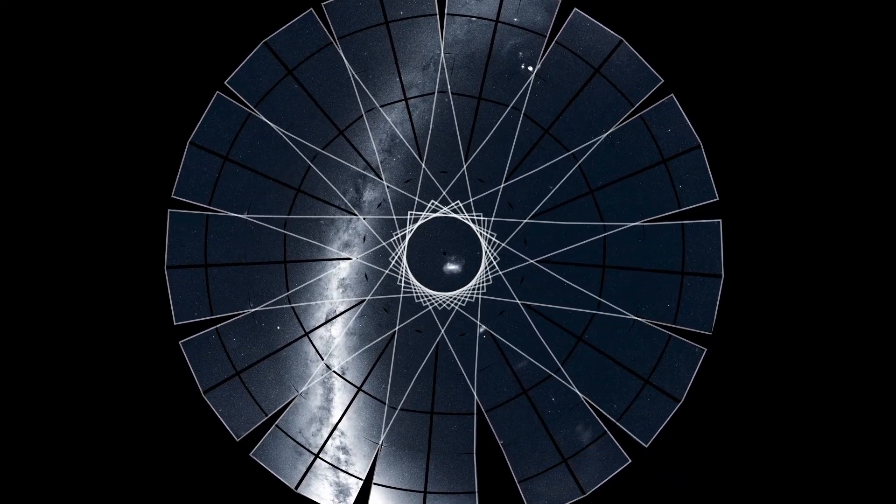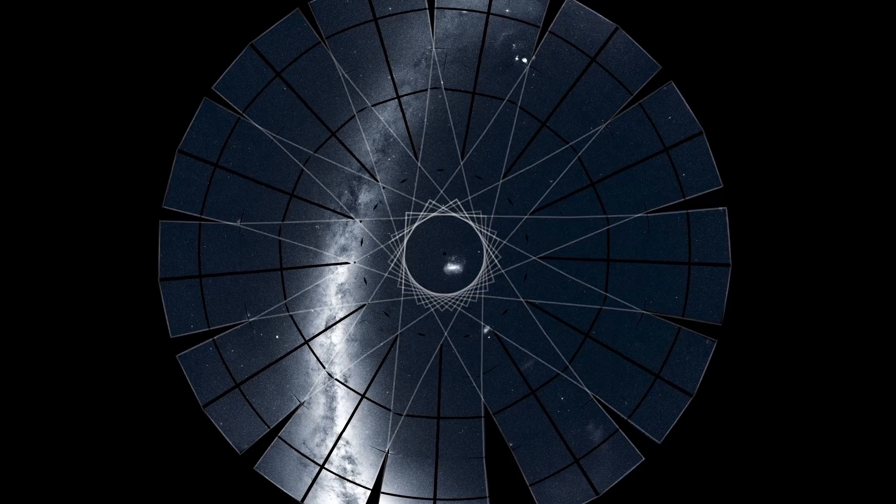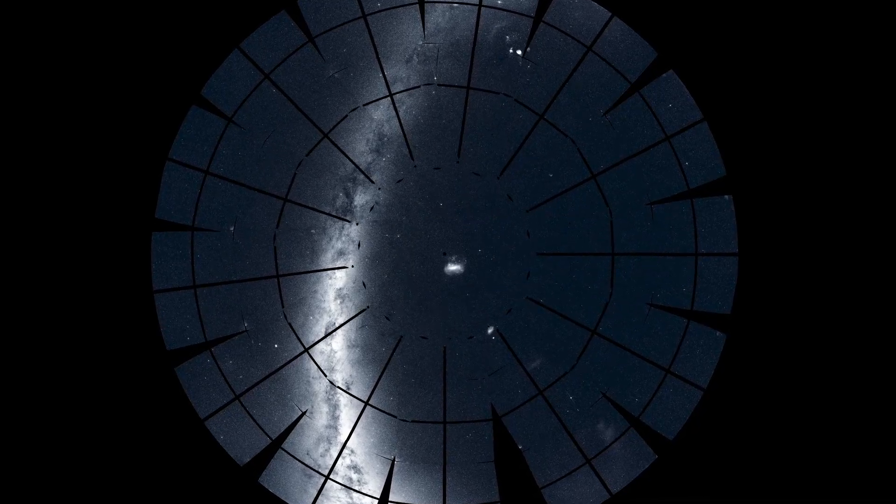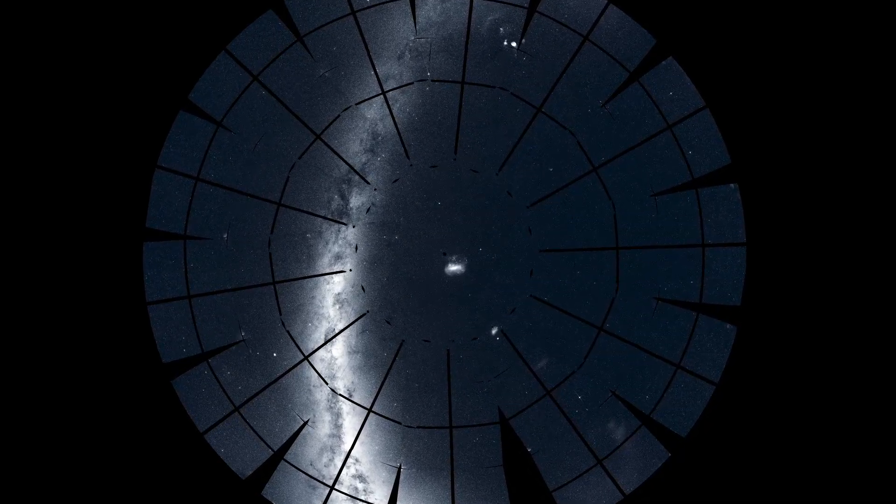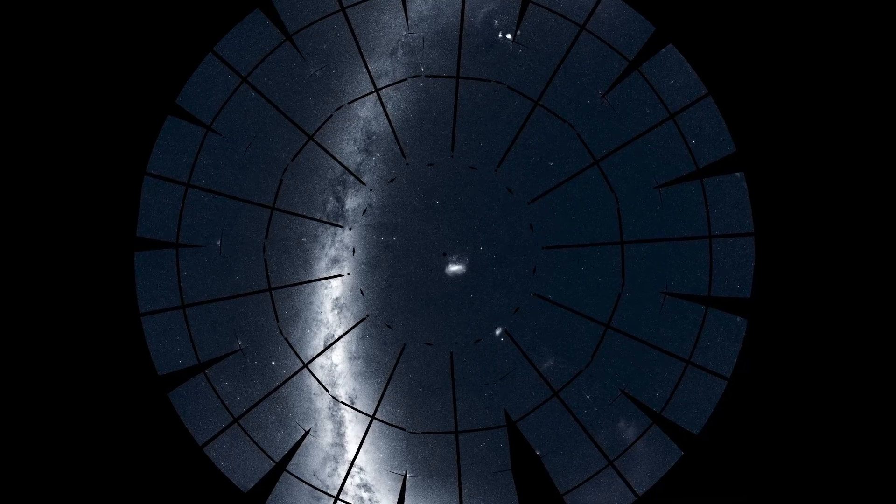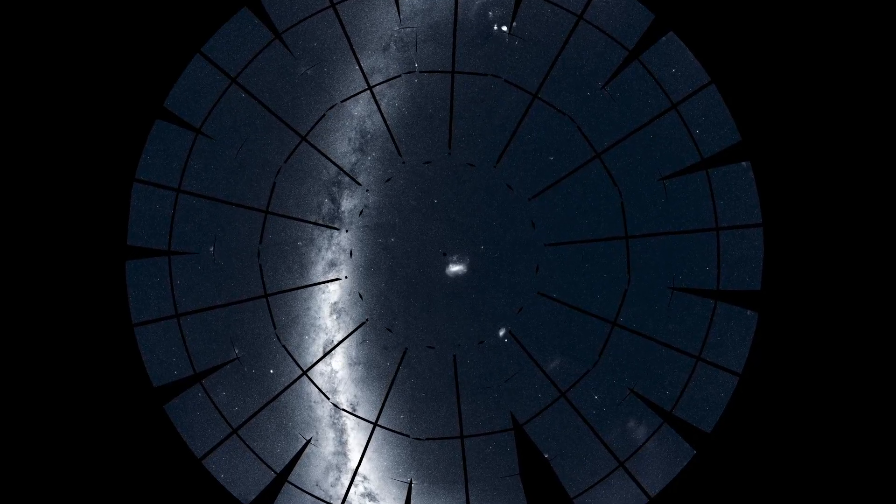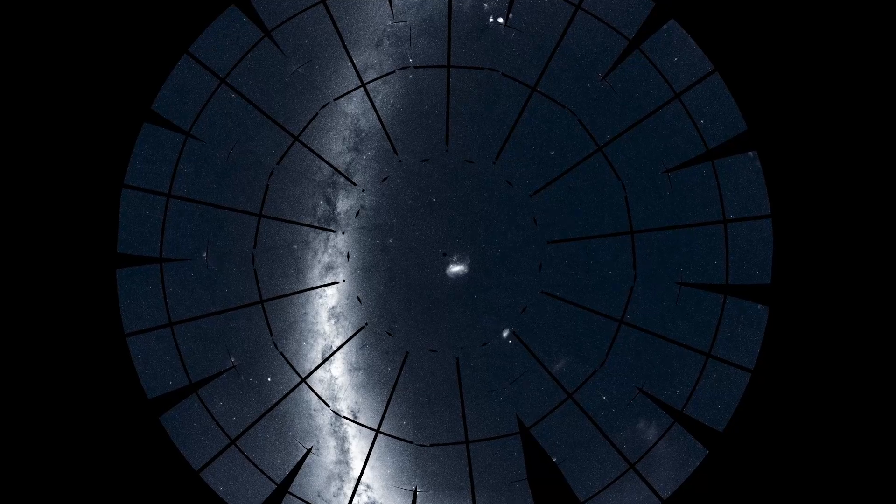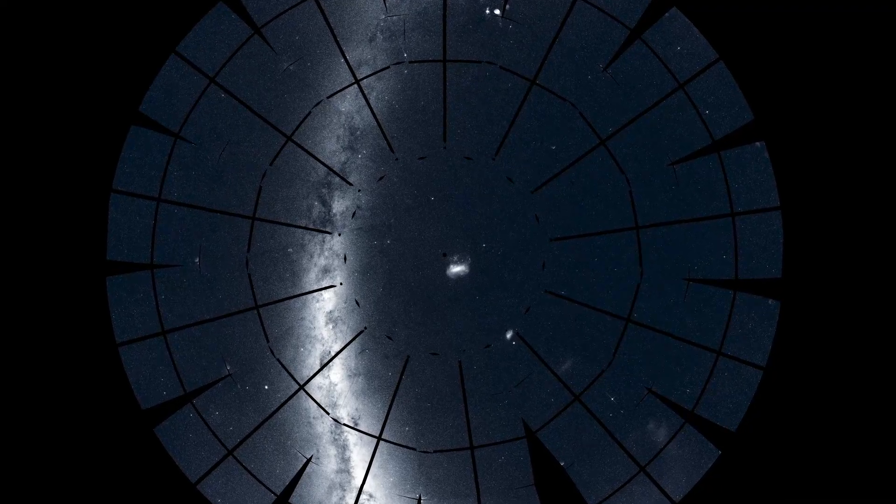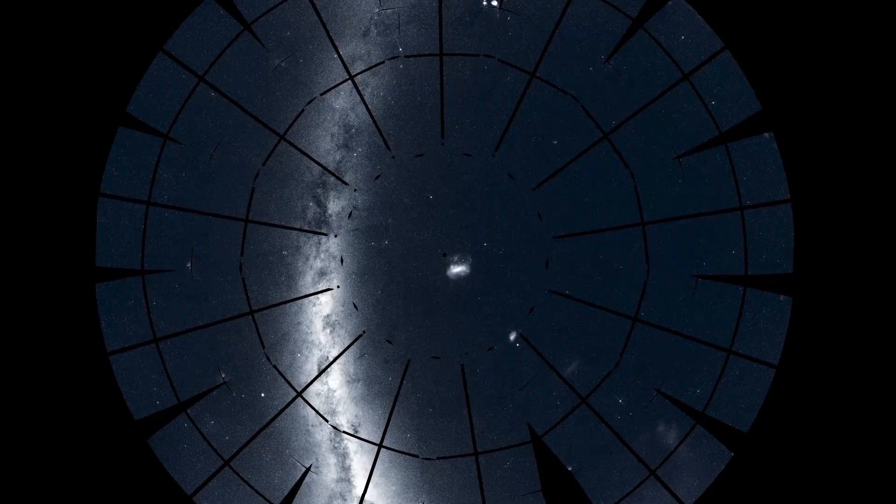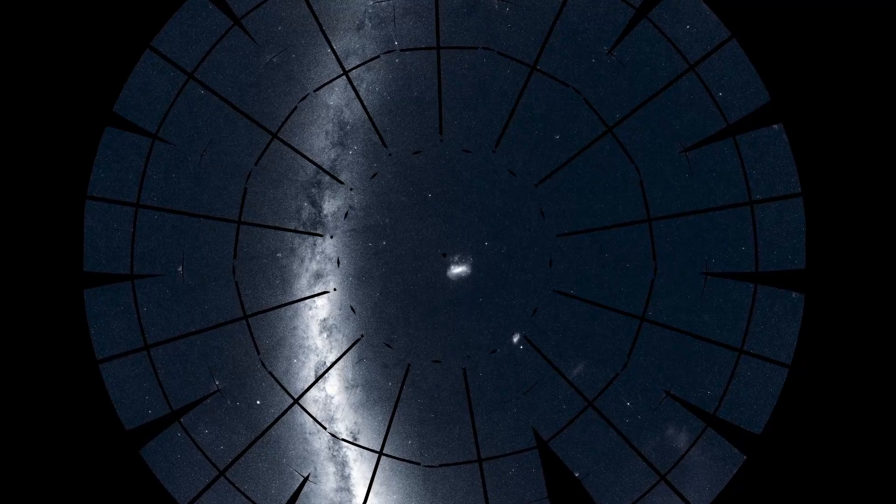TESS was watching for the slight dips in starlight as distant planets passed in front of their host stars, but it also caught other transient events like comets and supernovae in addition to building a beautiful panoramic picture of the sky. The bright band on the left is the Milky Way, our home galaxy viewed edge-on.